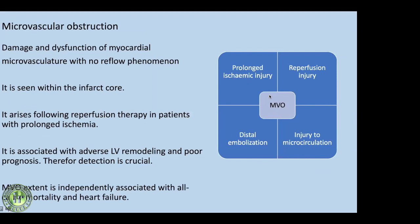MVO can occur with prolonged ischemic injury beyond four to six hours, with reperfusion injury from pharmacological or interventional treatment, from distal embolization of thrombus into the microcirculation, or when extensive injury impairs microcirculation. MVO is an independent risk factor for all-cause mortality and heart failure, leading to adverse left ventricular remodeling and poor prognosis.